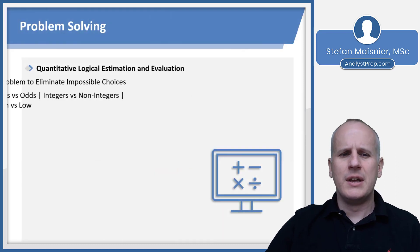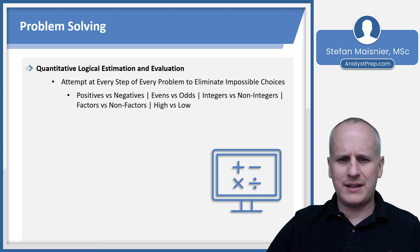The most important thing to recognize about logical estimation and evaluation is that you want to attempt it at every step of every problem to eliminate impossible choices. There are things that tell you whether a choice is possible or impossible based on the structure of the problem: positive versus negatives, evens versus odds, integers versus non-integers, factors versus non-factors, and even something as simple as whether it should be higher or lower.